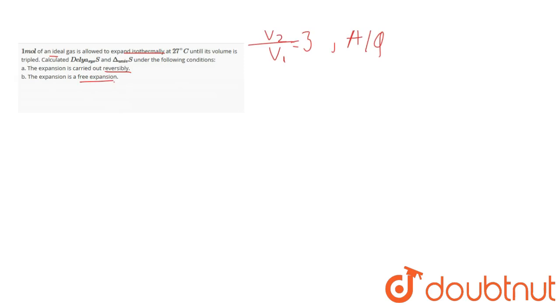Looking at the first part, delta S of system for a reversible process is nR ln(V2/V1) + nCv ln(T2/T1).